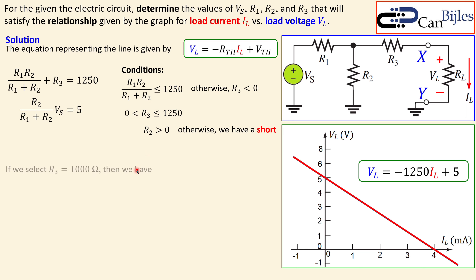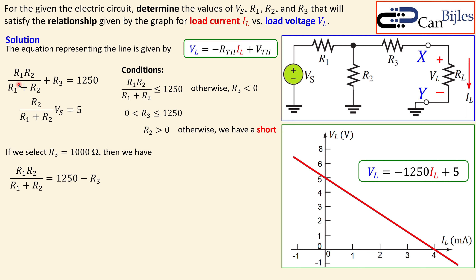If we select a simple value — say R3 equals 1000 ohms (1 kilohm) — then the parallel combination of R1 and R2 must be 1250 minus 1000, which equals 250 ohms. There are many combinations of R1 and R2 that produce a 250-ohm parallel equivalent.